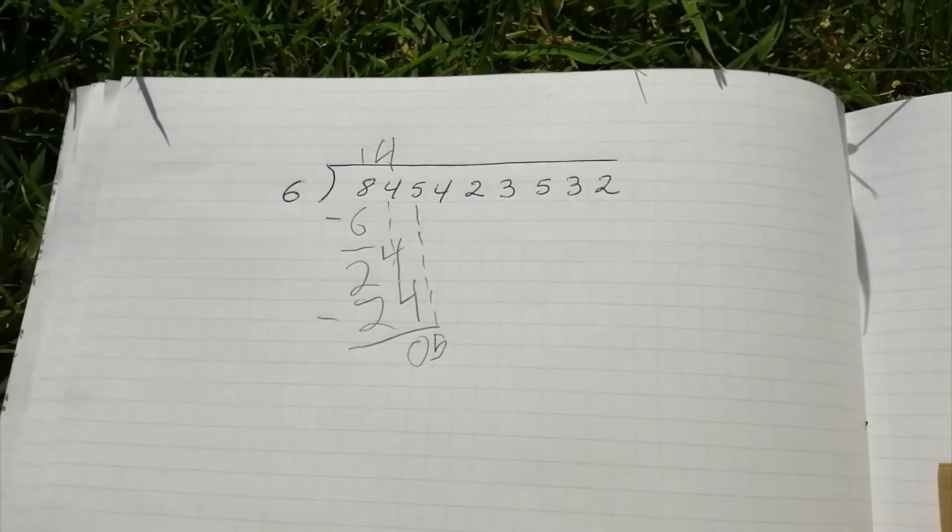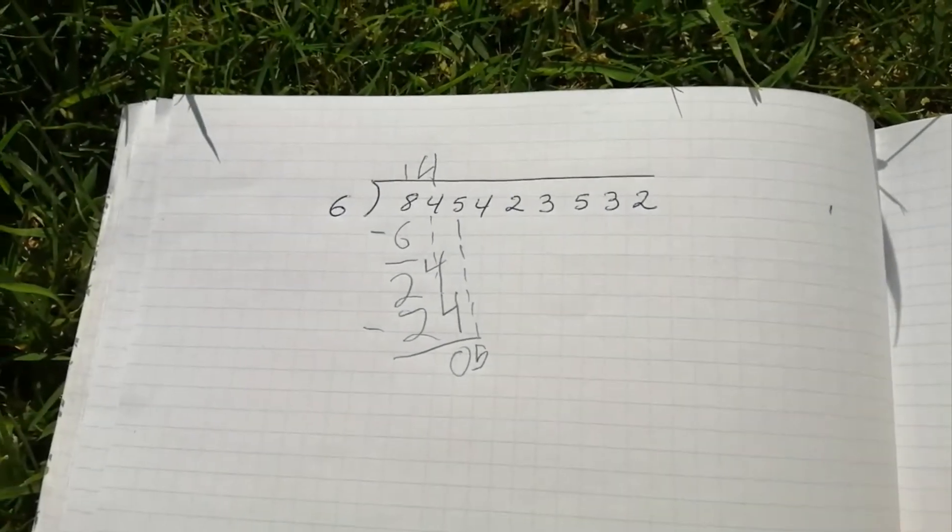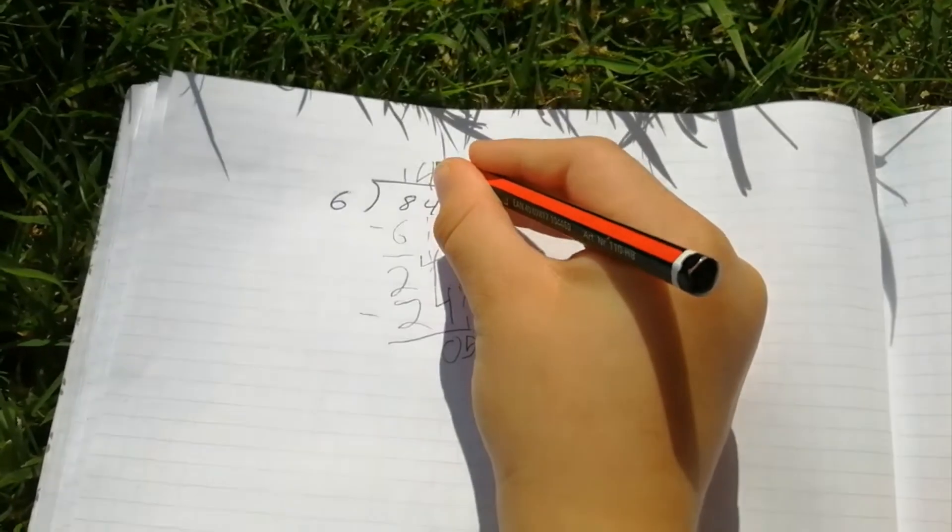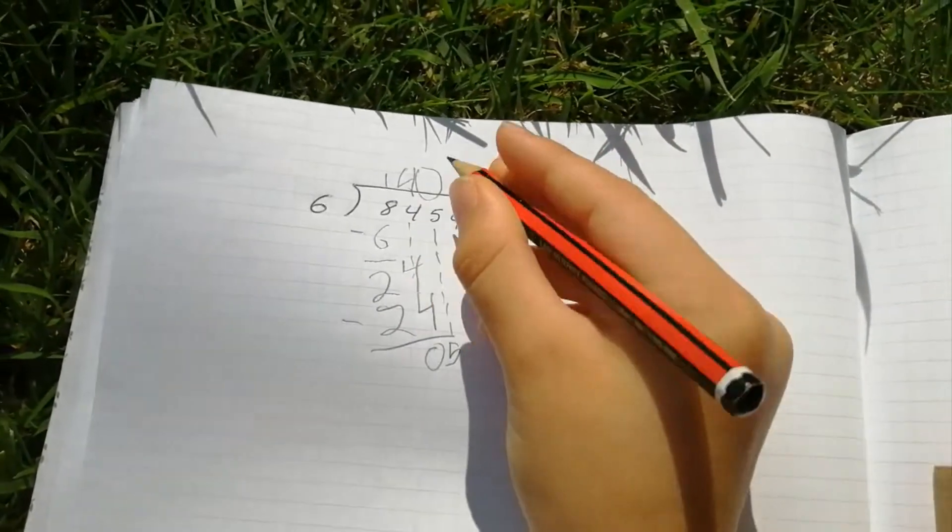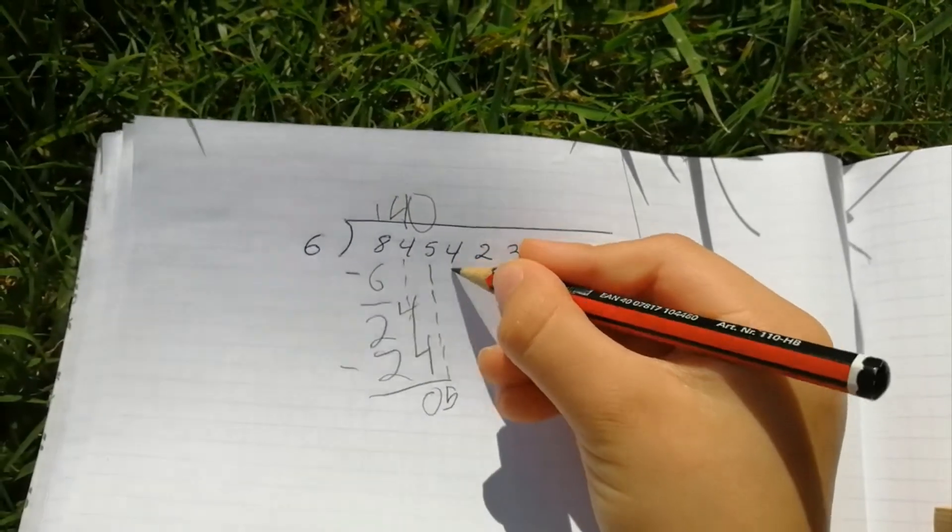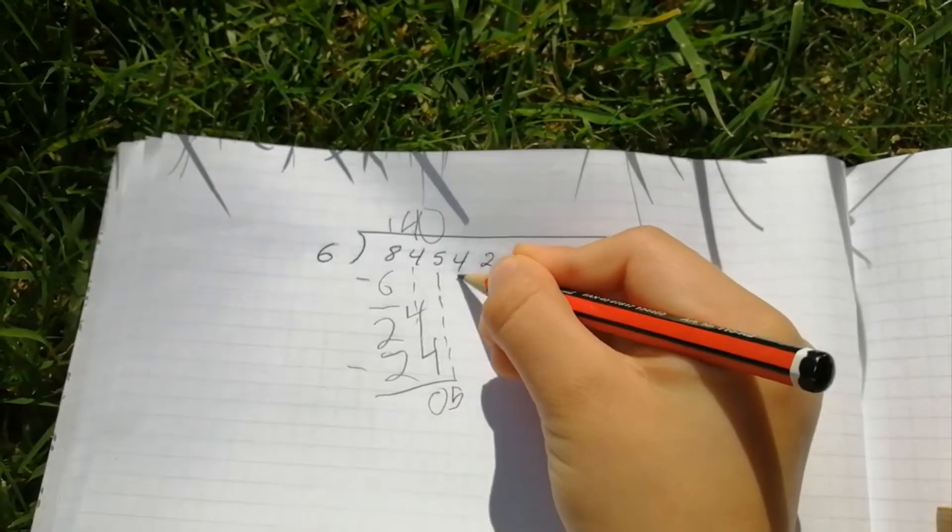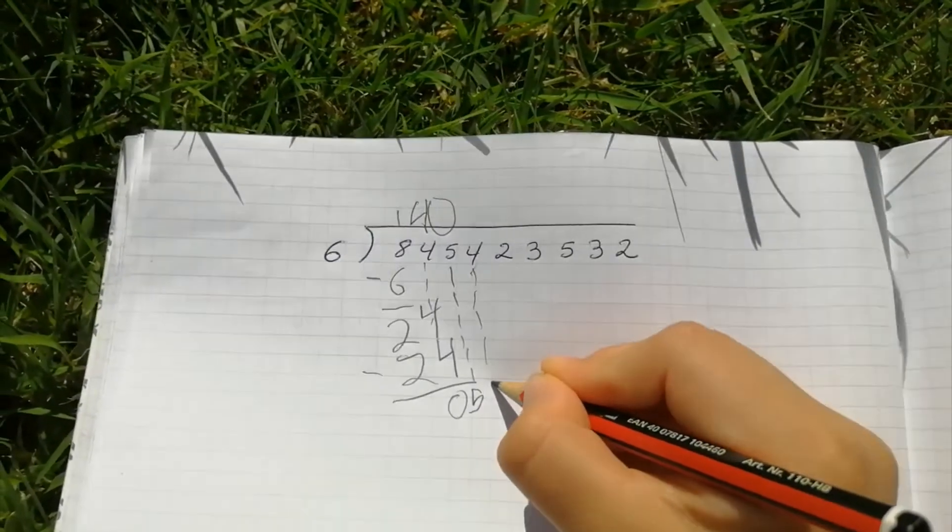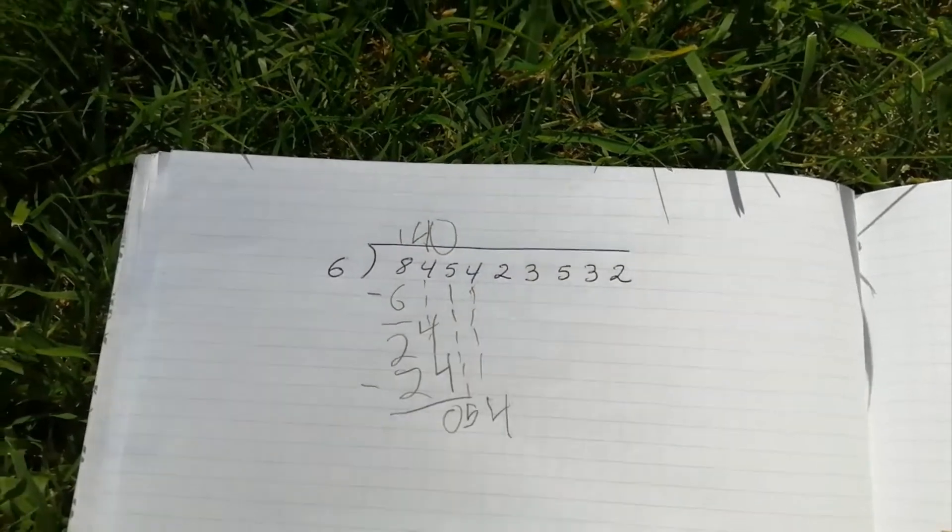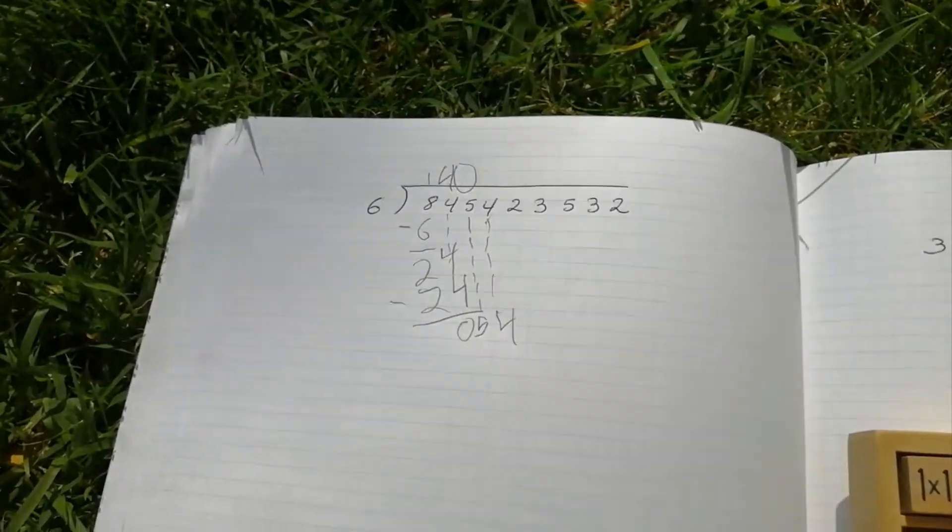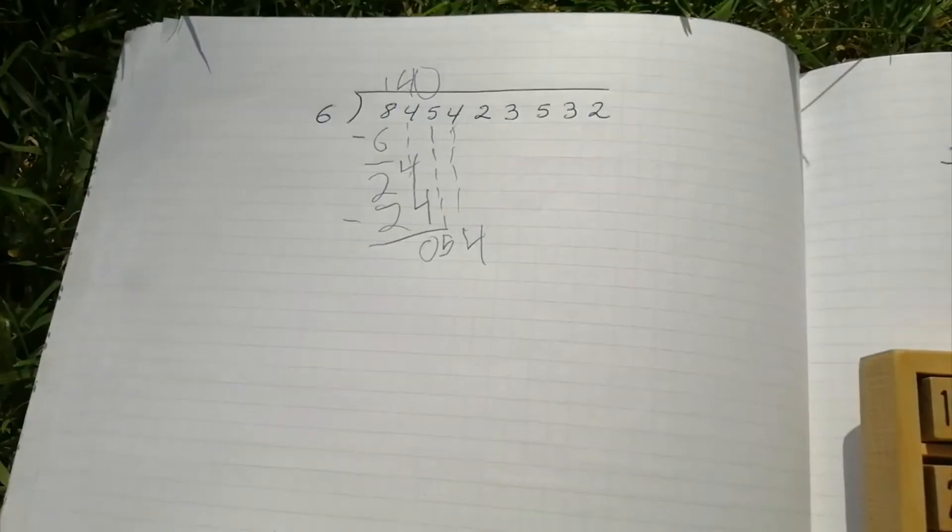And put the next number down right here to five. And how many sixes are in five? That is zero. So put a zero here. If it's zero you have to put the other next number. So it's six, six, six.